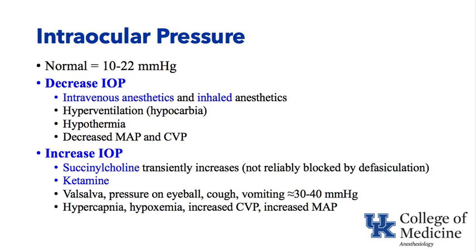Let's go into intraocular pressure first. Normal is about 10 to 22 millimeters of mercury. Some things can decrease it, such as our intravenous anesthetics — propofol, etomidate — our inhaled anesthetics, hyperventilation, getting a little cool, and decreasing the blood pressure or the central venous pressure. All those things can decrease intraocular pressure.